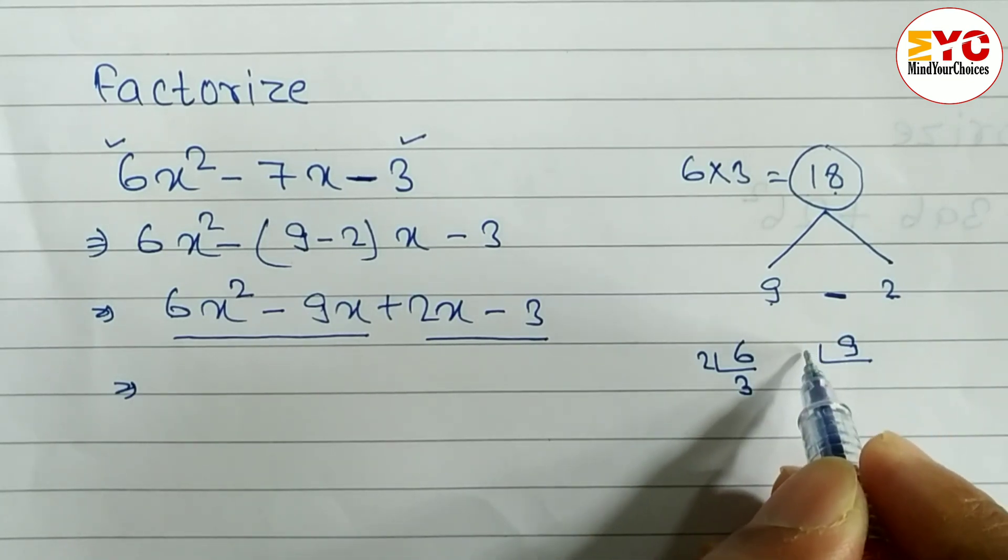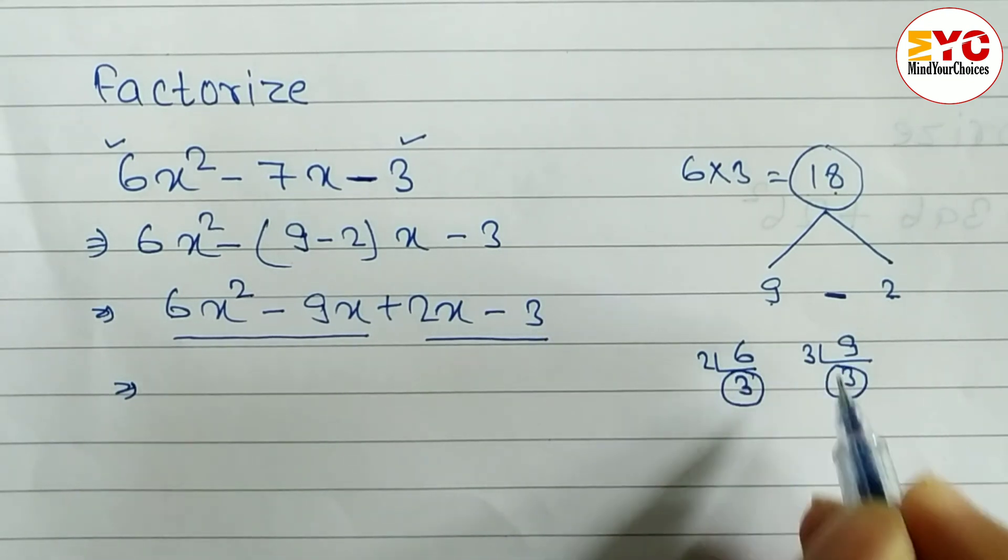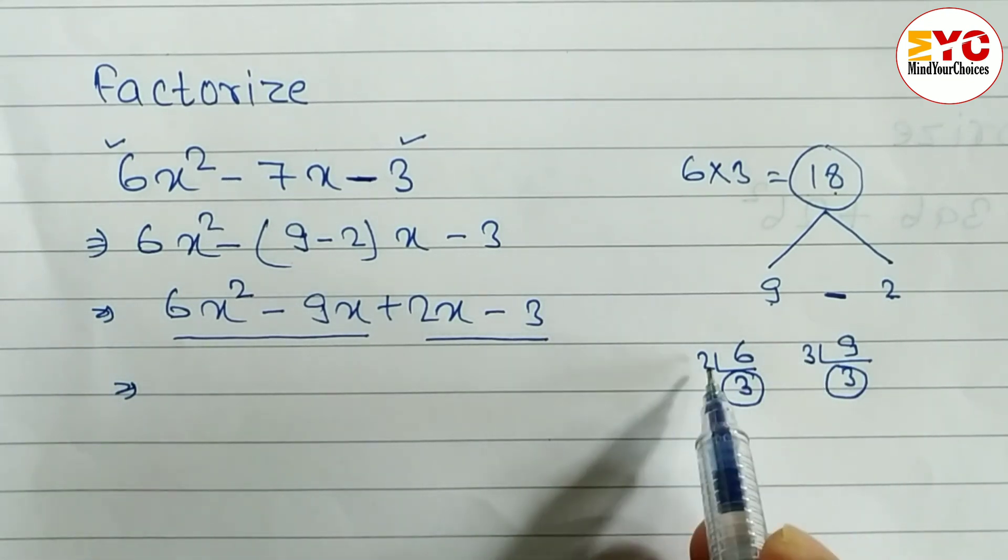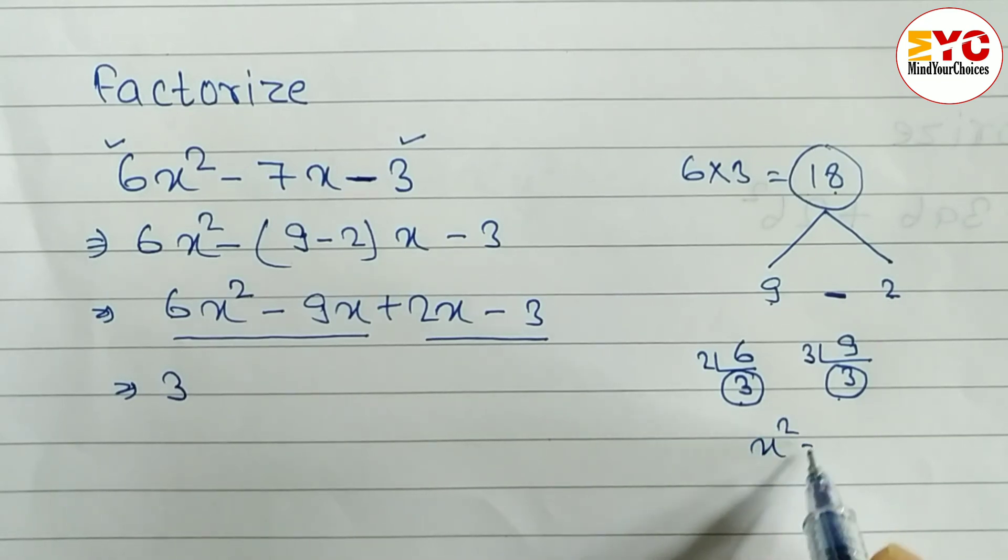So what is common here? You can see 3 here and here also 3. Common is 3, so we have to take 3 common. Here is x², here is x. x² means x × x and x means x only. So the common here is x.